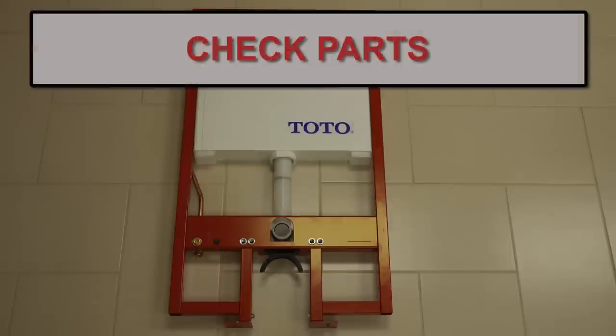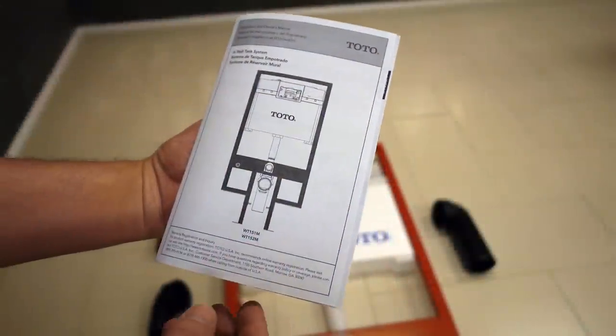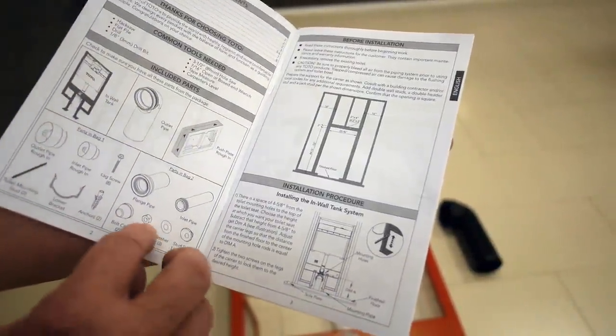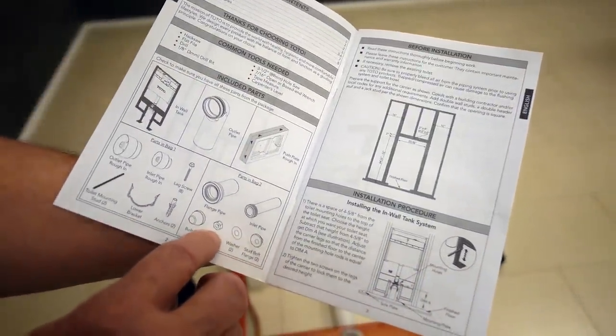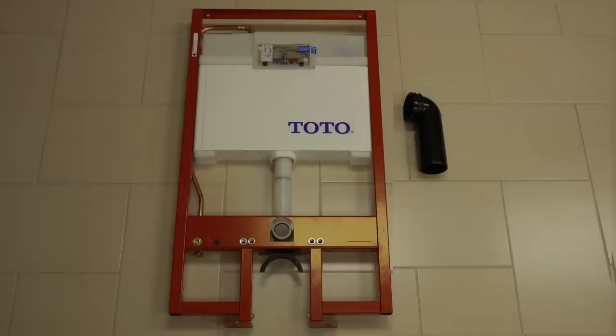Check to be sure you have all the parts that are included with the unit, starting with the metal carrier frame. Please read the instruction booklet before you begin. You'll need to leave this booklet with the owner so they will have the maintenance information they will need. The Acquia in-wall comes standard with a plastic elbow drain and gasket for installation in a 2x6 wall. This is what we'll use for this demonstration.